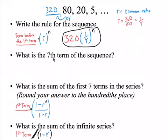So next question, find the 7th term. Well, can I just put 7 right there? So we're going to write 320, 1 4th to the 7th.